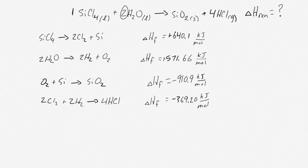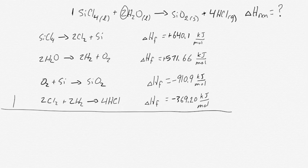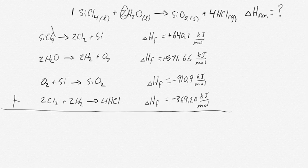Now that we have rewritten our equations and adjusted our delta H values as appropriate, we can begin to add together all of the individual equations. What we do is look at the left-hand side of the reaction arrows for each individual equation and add all of those components together. Then we look at the right-hand side of the reaction arrow and add all of those components together on the right-hand side of the overall reaction arrow.